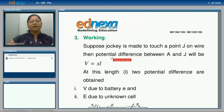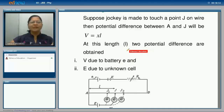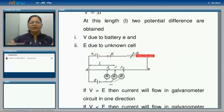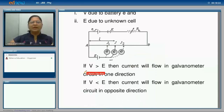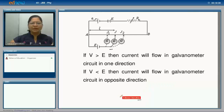When a jockey is made to touch a point Z on the wire, the potential difference between points A and Z will be V equal to X times L. At this length L, two potential differences are obtained: first V due to the battery E, and second the EMF of the unknown cell. If V is greater than E, current will flow in the galvanometer circuit in one direction, and if V is less than E, current will flow in the opposite direction.